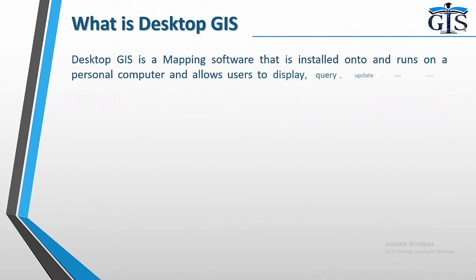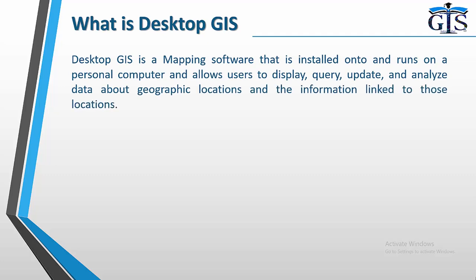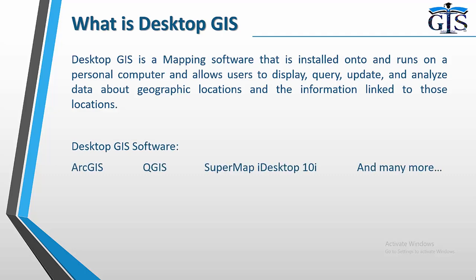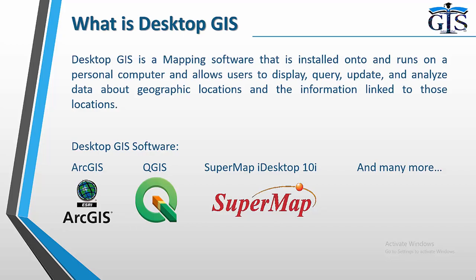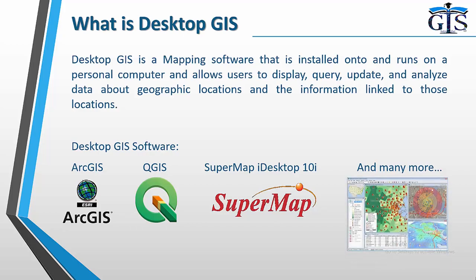Desktop GIS is a mapping software that is installed onto and runs on a personal computer, and allows users to display, query, update and analyze data about geographic locations and the information linked to those locations. Desktop GIS software includes ArcGIS, QGIS, SuperMap, and many more.